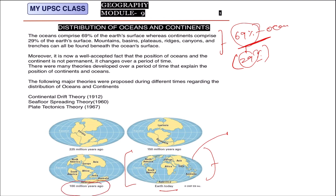But before 100 million years ago, things were different — these plates were in nearby places, with less distance between continents. If you go back 150 million years ago, there were only two parts. And before 225 million years ago, it was a single part — one ocean on one side and one crust part, which is known as Pangea.